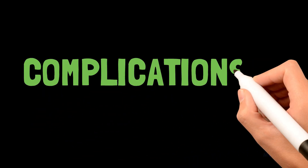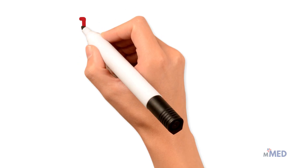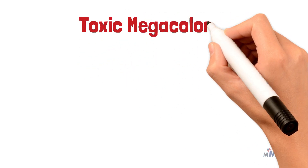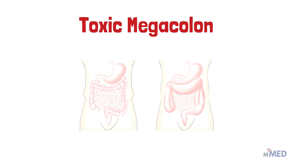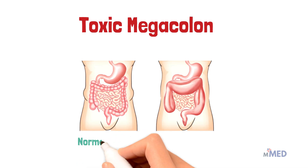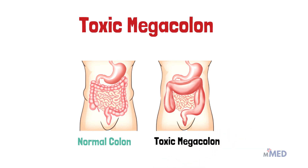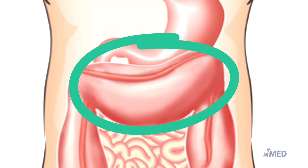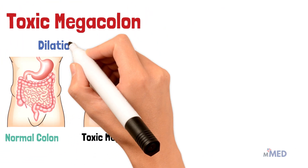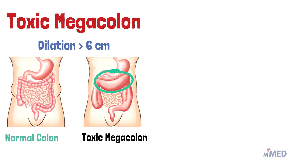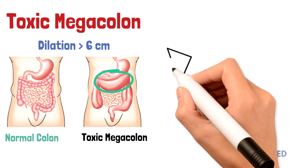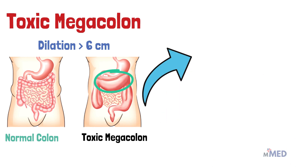The most important complication of ulcerative colitis is toxic megacolon, where inflammation extends to the colonic smooth muscle, resulting in smooth muscle paralysis, ultimately causing colonic dilation and systemic toxicity. If the colon is dilated more than 6 centimeters, it is considered toxic megacolon. This leaves the colon in such a weakened state that perforation is a common consequence.